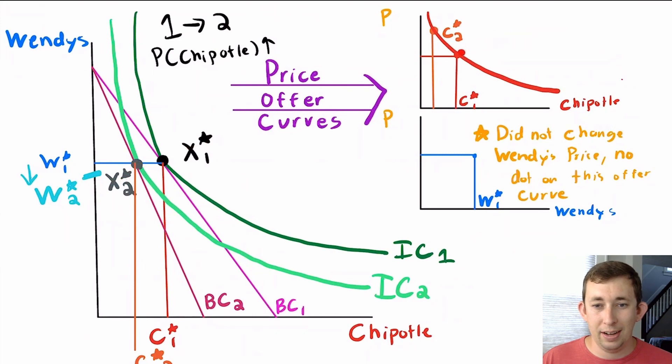I think it makes sense how I've got C1* and C2*. This is how much Chipotle I bought at the initial price, and this is how much I bought at the higher price. Notice that I'm buying less Chipotle after I've raised the price, which makes sense intuitively.